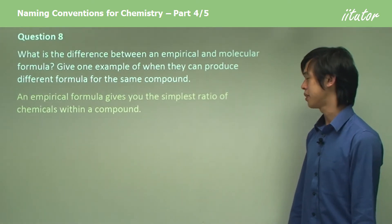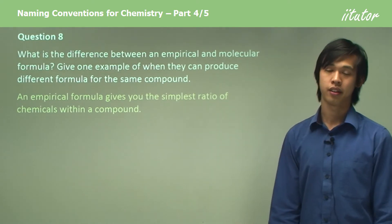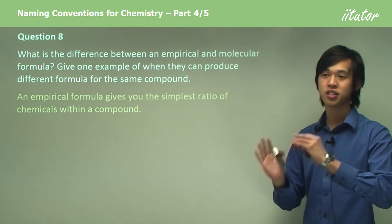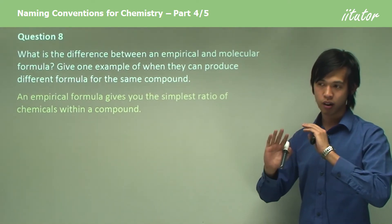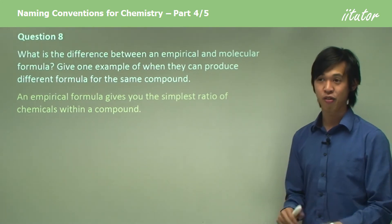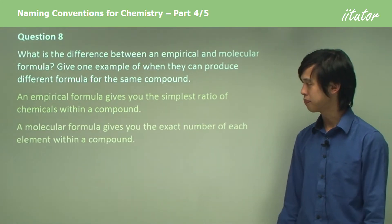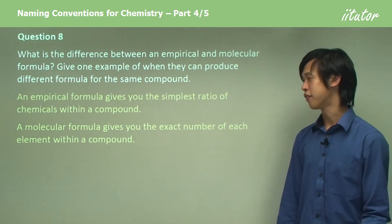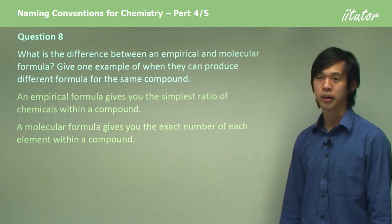An empirical formula gives you the simplest ratio of chemicals within a compound. So the simplest, the lowest numbers that still maintain the ratio of elements.